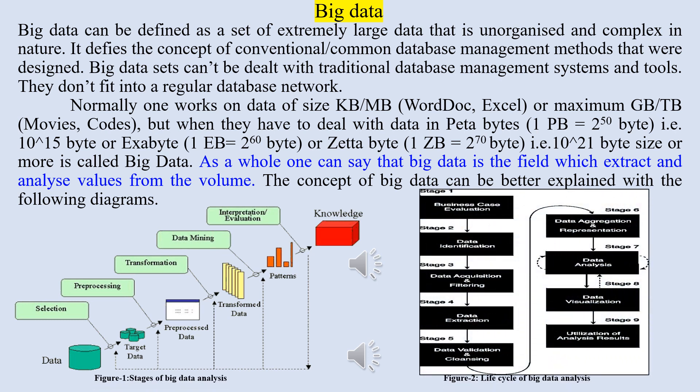Big Data can be defined as a set of extremely large data that is unorganized and complex in nature. Big Data sets cannot be dealt with traditional database management systems and tools; they do not fit into irregular database networks. Normally one works on data of size kilobyte or megabyte for word documents or Excel files, or maximum in gigabyte or terabytes for movies or coding. But when they have to deal with data in petabytes (2 to the power 50 bytes or 10 to the power 15 bytes), or exabytes (2 to the power 60 bytes), or zettabytes (2 to the power 70 bytes, i.e. 10 to the power 21 bytes) or more, that is called Big Data.